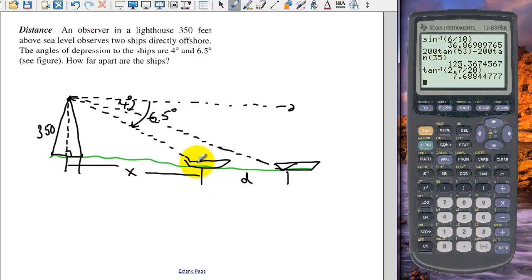From here. And then we have, that's to the first boat, which is 6.5 degrees. And then we have a total distance, which is going to be x plus d. And we can subtract those. So let's find an equation for x first.